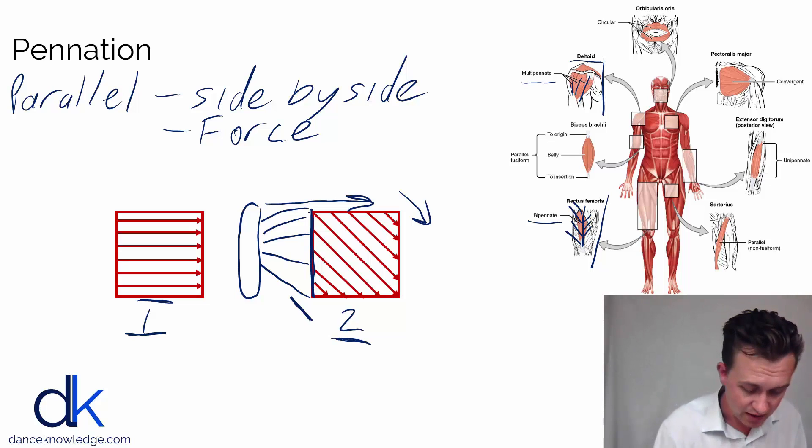So if we look at the fibers here in diagram one, we've got effectively six muscle fibers up and down here running side by side. But then if we look at the cross section, the number of fibers across muscle two here, we end up with nine muscle fibers in parallel with one another.